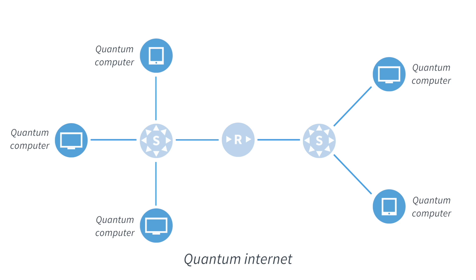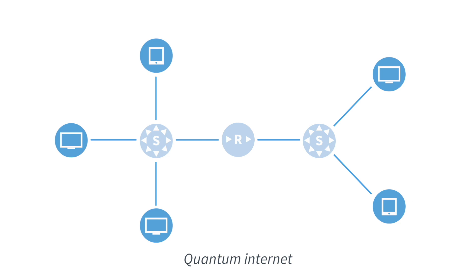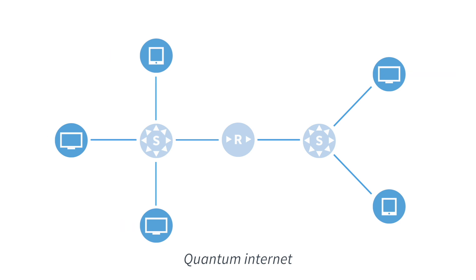These quantum computers actually don't need to be very complicated. It turns out that most applications of a quantum internet only require these end nodes — quantum computers — to be very simple and have less than 10 qubits. In fact, for most applications they only need to have one qubit. The reason why we typically do not need many qubits is because a quantum internet draws its power from quantum entanglement, and already one qubit at each endpoint is sufficient to have entanglement.